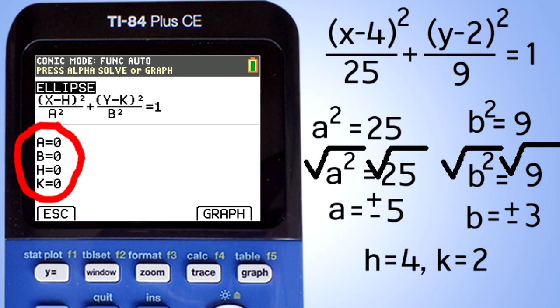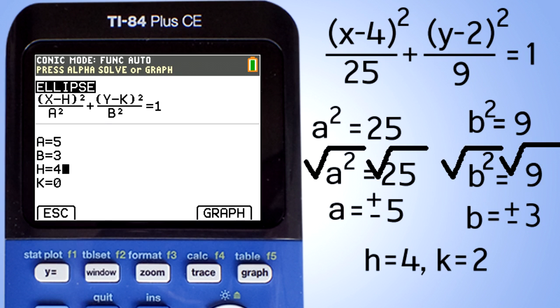Now let's plug in these numbers into the calculator. A equals 5. Now use the down arrow key and go to B. And enter 3 for B. Go down to H. Enter 4 for H. Go down to K. Enter 2 for K. Now press this graph button here to graph the ellipse.